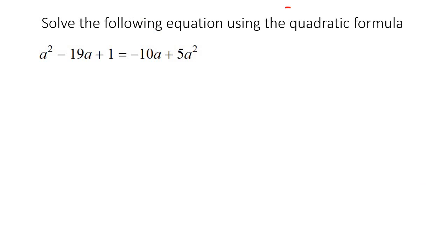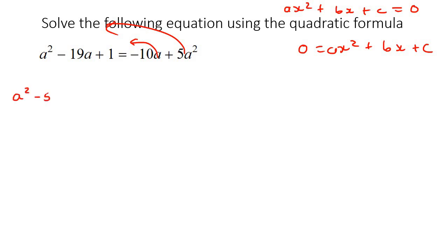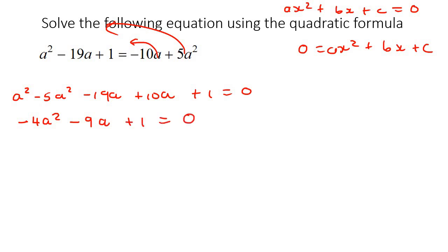Here's our next example. Remember, you always want it in the form ax squared plus bx plus c equals to 0. You can either take everything to the right or to the left — the answer at the end will be exactly the same. I'm going to take everything to the left, so we end up with a squared take away 5a squared — because this becomes negative — and then negative 19a plus 10a, because this one would become positive, plus 1 equals 0. So that gives us negative 4a squared take away 9a plus 1 equals to 0.